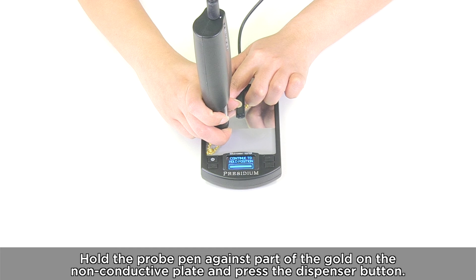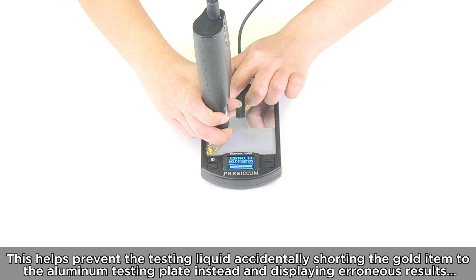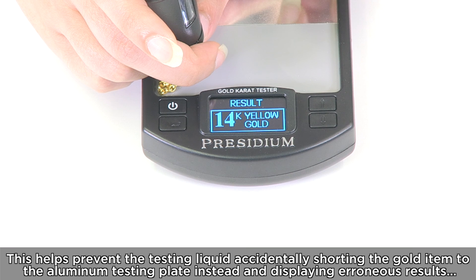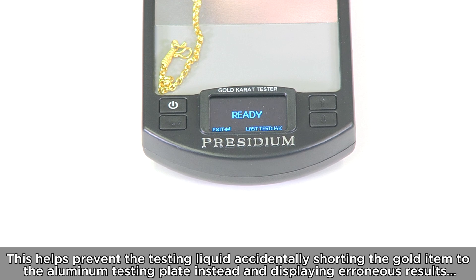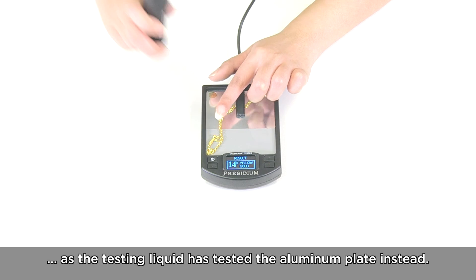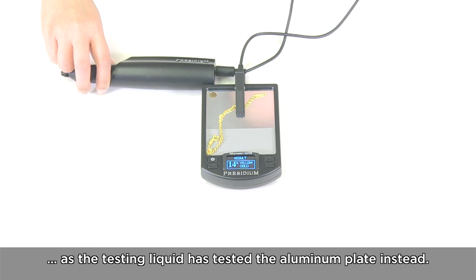Hold the probe pen against the part of the gold that is on the non-conductive plate and press the dispenser button. This helps to prevent the testing liquid from accidentally shorting the gold item to the aluminum testing plate instead and displaying erroneous results as the testing liquid has tested the aluminum testing plate instead.